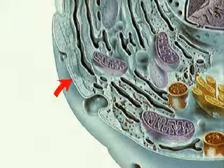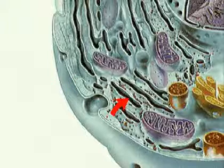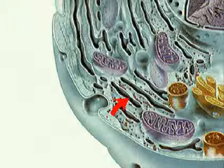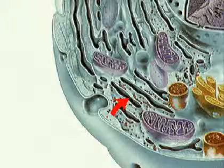The endoplasmic reticulum is a network of flattened sacs and tubes, which provides a communication channel for materials passing between the nucleus and the cell's environment.